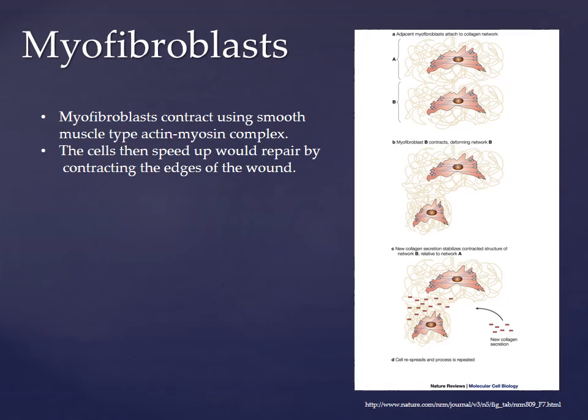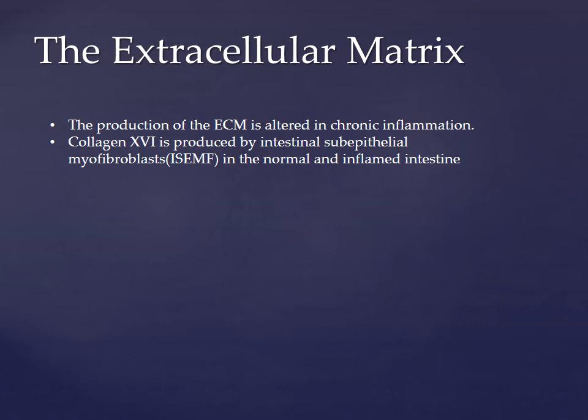Myofibroblasts contract using the smooth muscle type actin-myosin complex, speeding cell wound repair by contracting the edges of the wound. The production of the extracellular matrix is altered in chronic inflammation. Collagen-16 is produced by the intestinal subepithelial myofibroblasts, which we will now refer to as ISEMF, in both the normal and inflamed intestine.